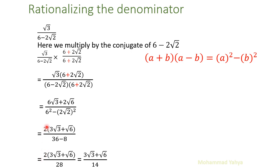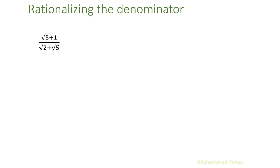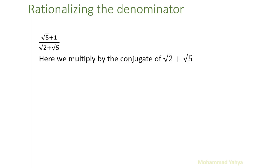From the numerator 6 radical 3 + 2 radical 6, we take 2 as a common factor: 6 divided by 2 is 3 and 2 divided by 2 is 1. Then we simplify the 2 with 28, so the denominator becomes 14.